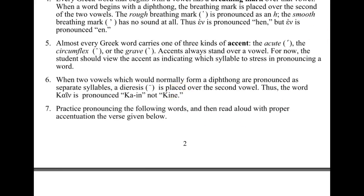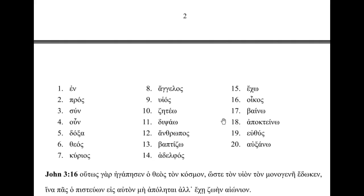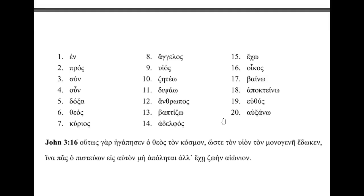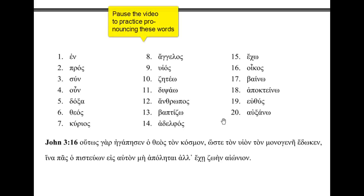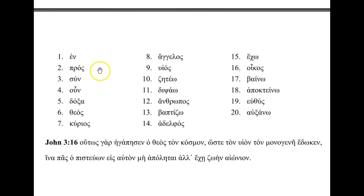We're going to end the tutorial with some practice pronouncing words. Try to pronounce them before listening. Number one: en. Number two: pros. Number three: sun. Number four: un. Number five: doxa.